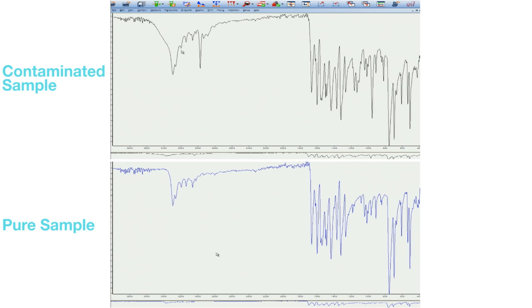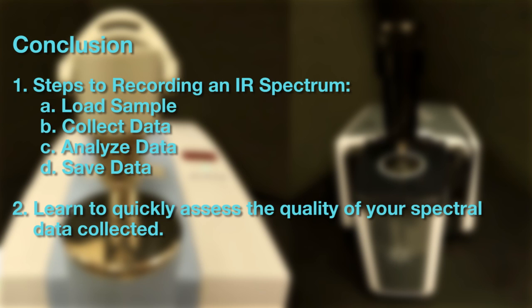Always be on the lookout for contaminants. To conclude this video, you've learned about and watched the demonstration of the four steps to recording an IR spectrum for a compound: loading of the sample, collecting the data, analyzing the data, and finally how to save the data. Be sure to be familiar with IR spectroscopic analysis—that is, what bands you are looking for and what the wavenumbers represent—because it will save you a lot of time in the end.